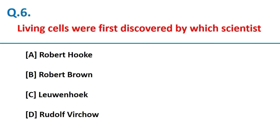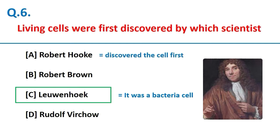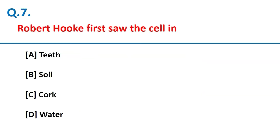Living cells were first discovered by Leeuwenhoek, who found them in a bacteria cell. However, the cell was first discovered by Robert Hooke, who first saw the cell in cork, which is present in the bark of a tree.